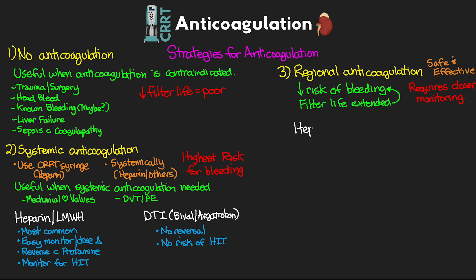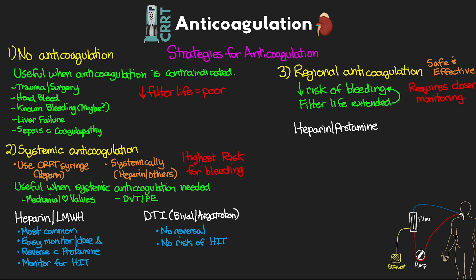There are three main drugs used for regional anticoagulation. The first is heparin in combination with protamine. To understand this, I'll bring up the diagram of our CRRT circuit: heparin is given pre-filter — infused into the blood after it's drawn from the patient but before it reaches the filter — and then protamine is given post-filter, returning into the blood just before it goes back to the patient. The goal is that for every 100 units of heparin given, you give 1 gram of protamine to reverse its effects.